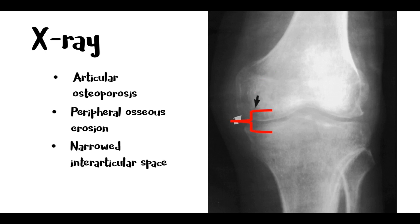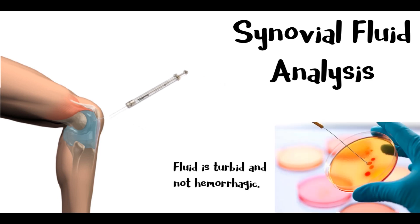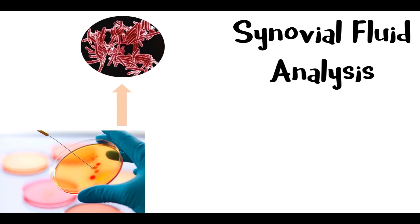Another diagnostic tool to diagnose TB arthritis is synovial fluid analysis. This is the routine test done. Synovium will appear as turbid and is usually non-hemorrhagic. Acid-fast stains are not reliable since only 19% of tests are positive for this.